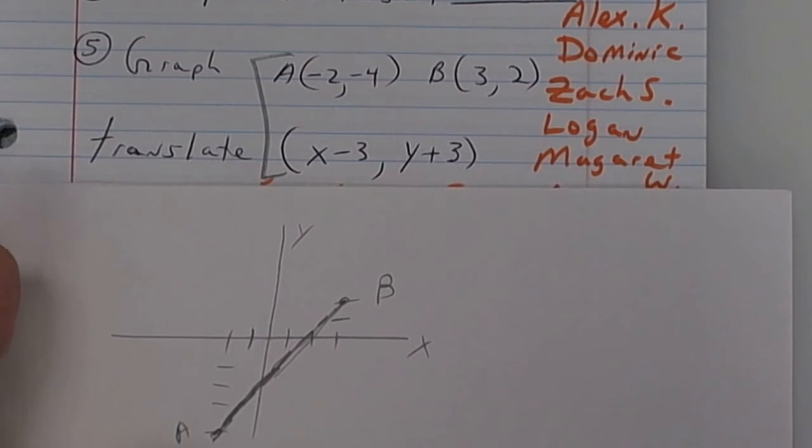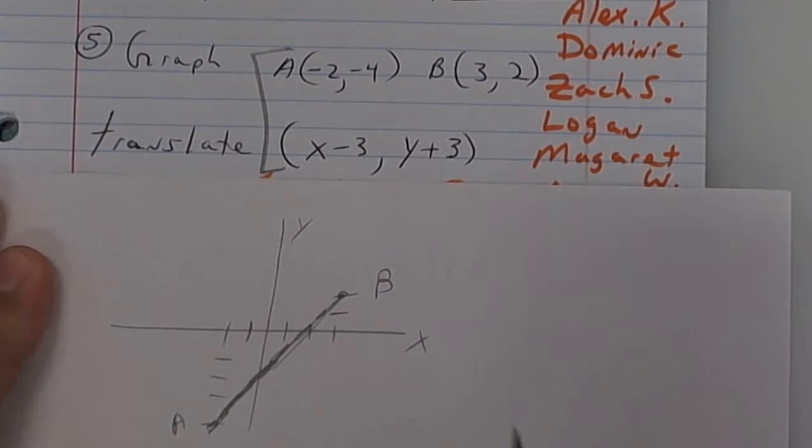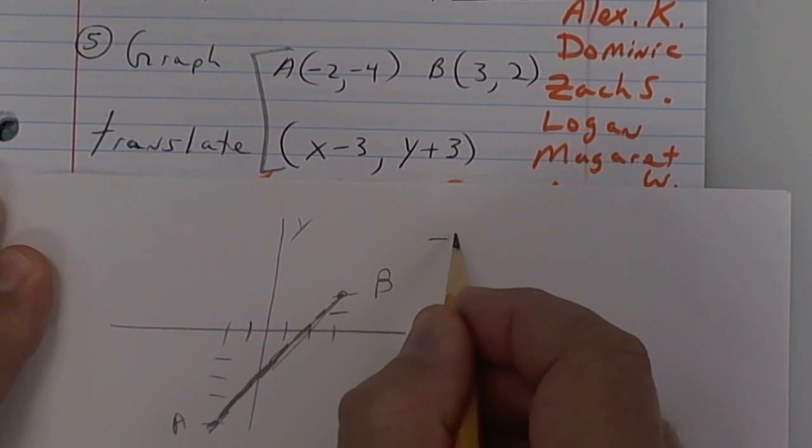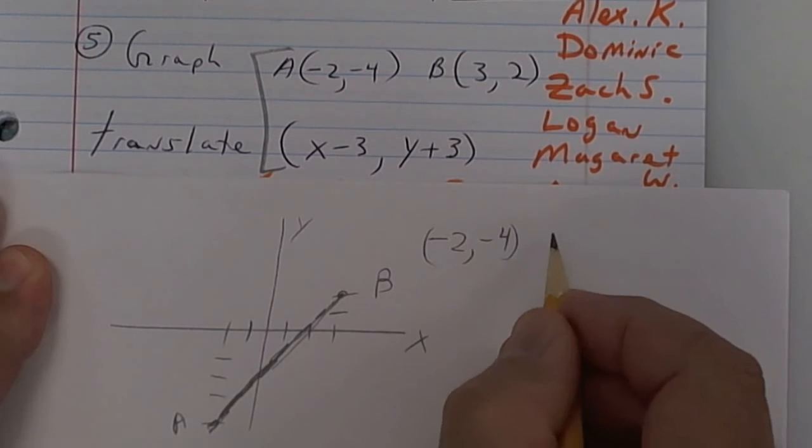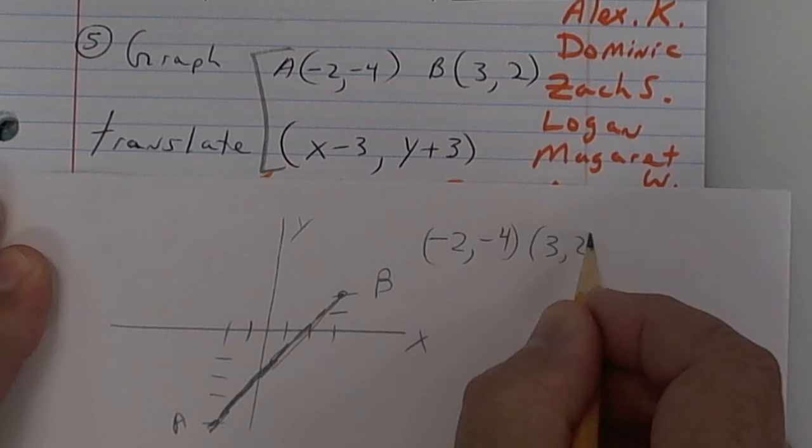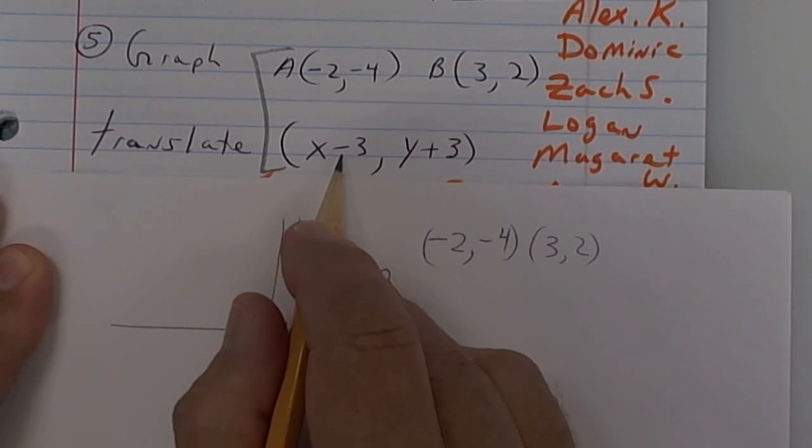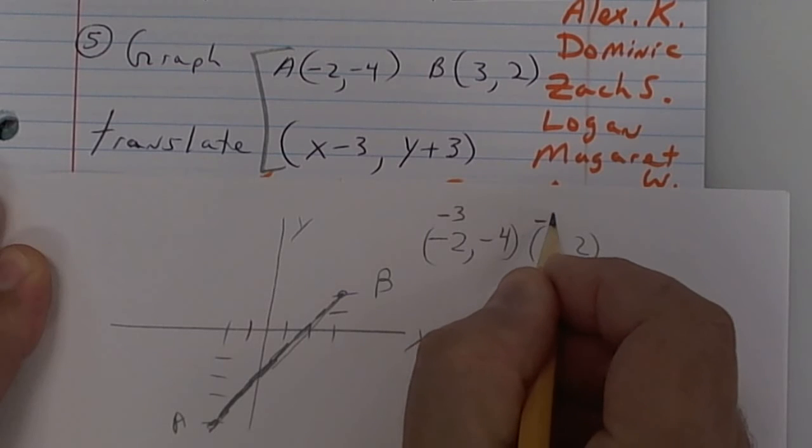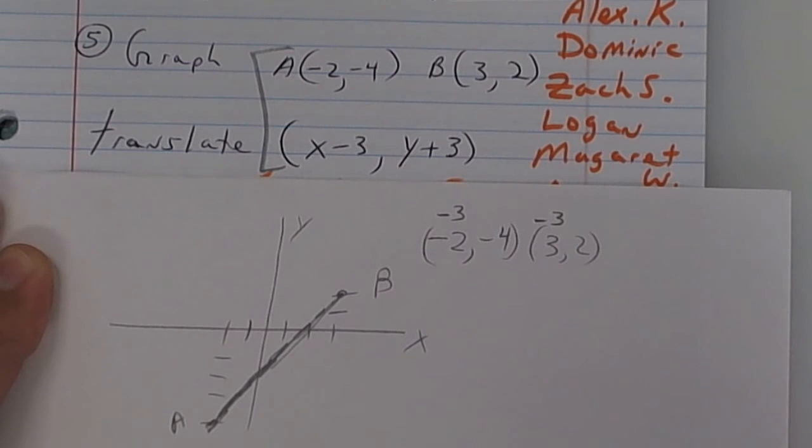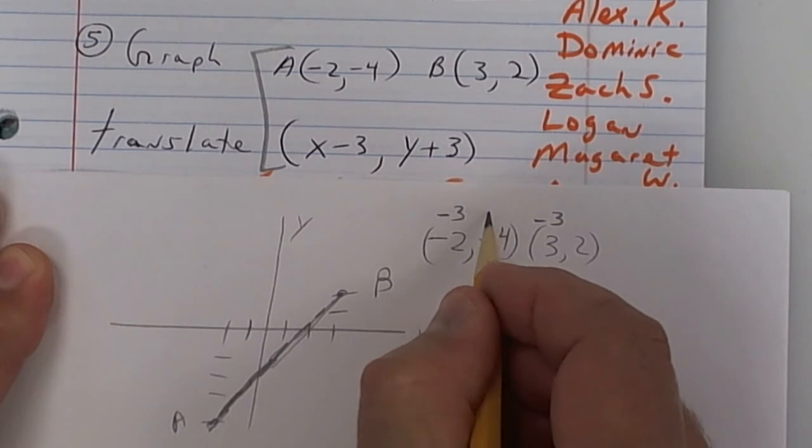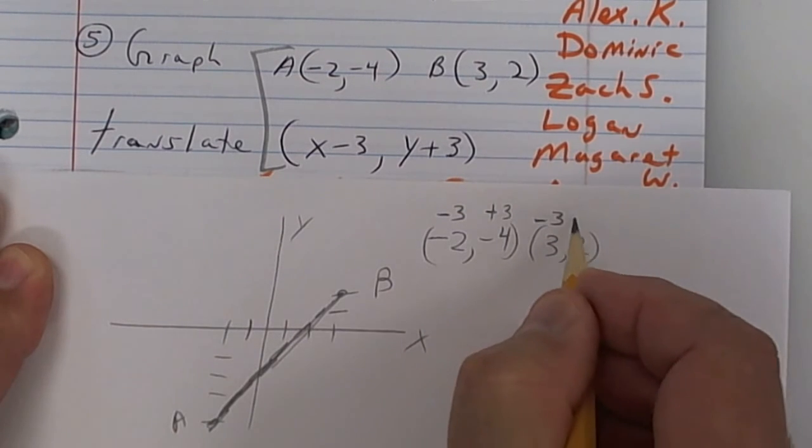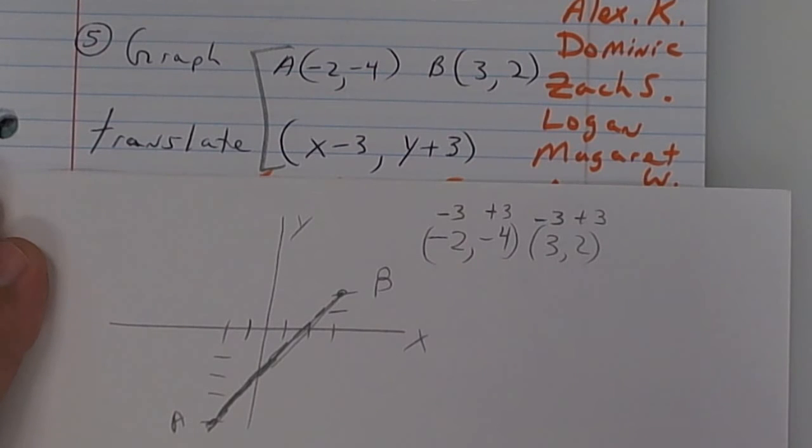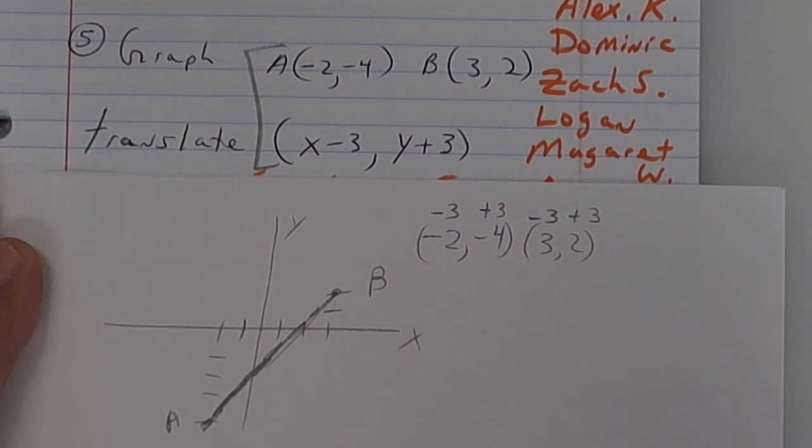Now we're going to translate it. We're going to take this point and the other point and we're going to use this rule. So where the X is you're going to put a negative 3. So we're going to push it to the left 3 spaces is what we're doing. And then we're going to go up 3 spaces. So put a plus. This is on your test. It's on today's worksheet as well. Any questions about what I'm saying or what I'm doing so far?